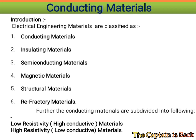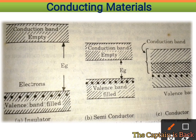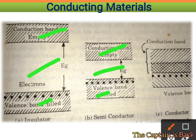There is a big difference between conductors, semiconductors, and insulators in their energy gap diagrams, or energy level diagrams. Normally we have three bands: the conduction band, energy gap, and valence band. In a conductor, there is no energy gap — the conduction band and valence band overlap.